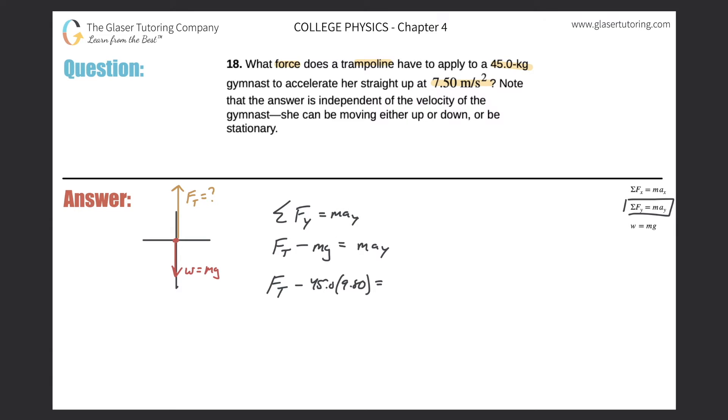The mass of the, again, same mass. It's still the gymnast here. So it's 45.0 kilograms. And then multiplied by the applied acceleration that the object is experiencing or will experience, 7.50. So now all it is is just calculating, right?